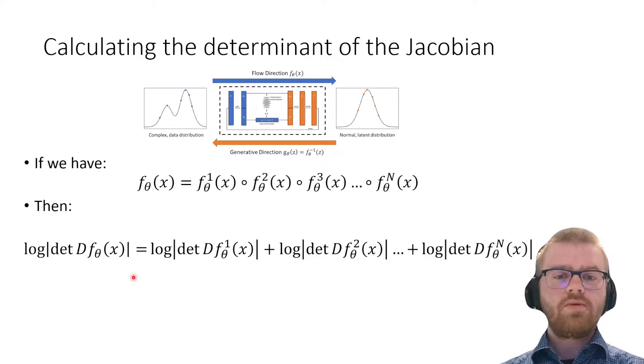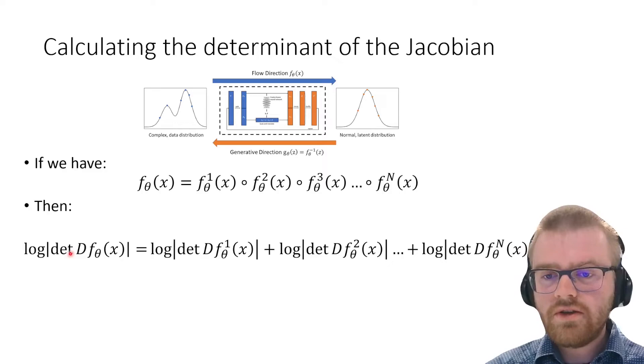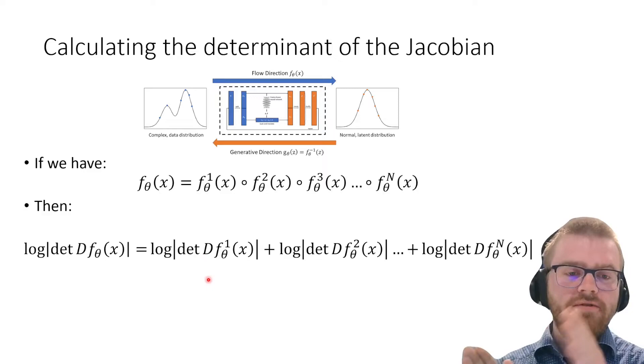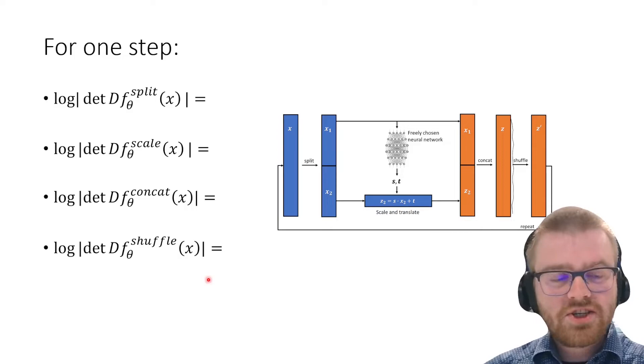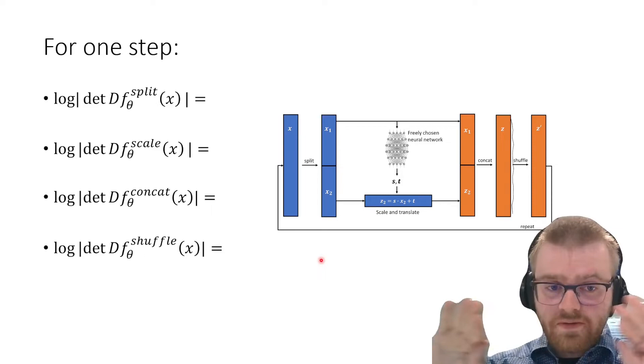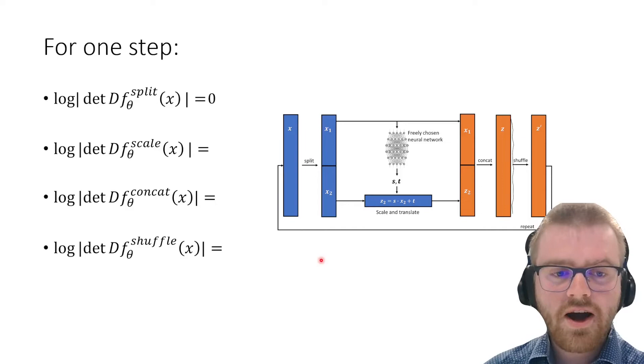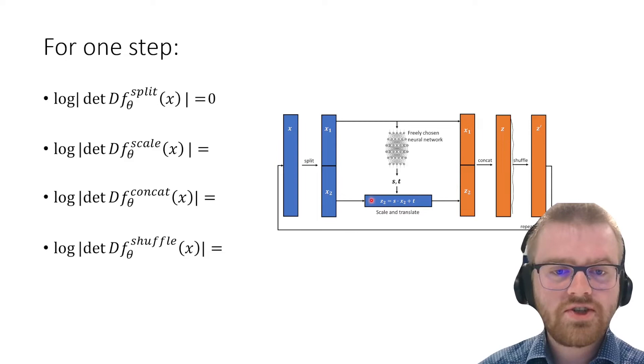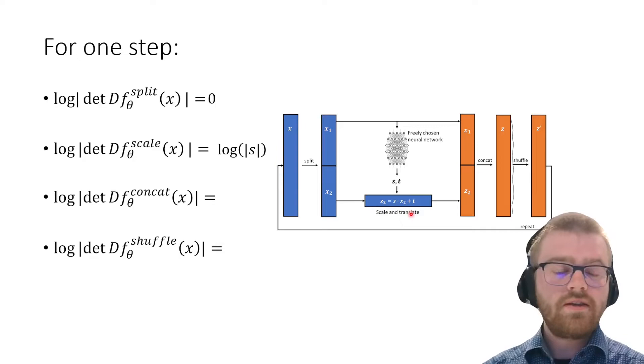How do we calculate the determinant of the Jacobian? In our case, we're stringing many invertible functions together—a composition of functions. The nice thing is that the log determinant of the entire chain is just the sum of the individual log determinants. For one step of our affine flow: splitting vector x into x1 and x2 does not move sand around, so that's zero. The scale is important because scaling moves mass around. If we take the derivative of z equals s times x plus t with respect to x, we get s. Taking the log determinant, we get the logarithm of the scale.